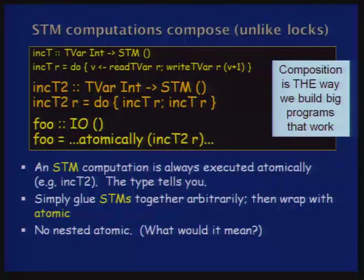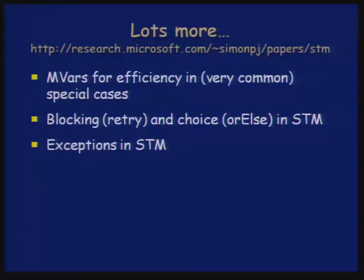Enough on atomic stuff — there's a paper about this on my homepage. I haven't had time to tell you about 'retry' and 'orElse' — two new combinators that deal with blocking and choice inside transactions that make transactions way more powerful. Once we'd learned how to implement transactional memory in Haskell, we found these were equivalent to a condition variable — but an amazingly beautiful condition variable. You'd have to read the paper. It's easy reading too — you'll read it in the bath.